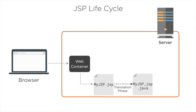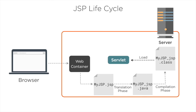The container then tries to compile the servlet Java source into a class file. Java language or syntax errors are caught at this phase, which is called the compilation phase. Once the Java source file is compiled to a class file, the container loads the newly generated servlet class and instantiates the servlet, then calls the servlet's JSP init method. The container then creates a new thread to handle the client's request and the servlet's JSP service method runs.